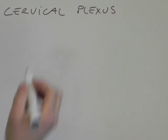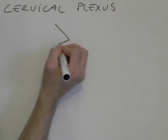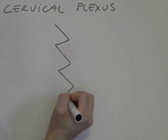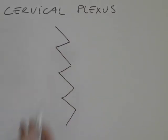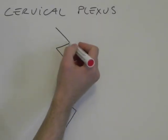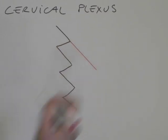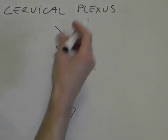First of all, we draw four loops that are coming out from the first five cervical vertebrae. Then we lengthen the first line downward, and we draw a parallel line to this one.